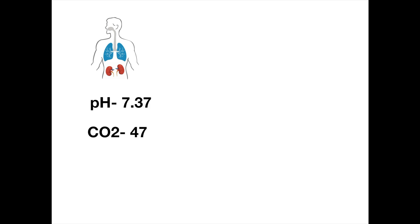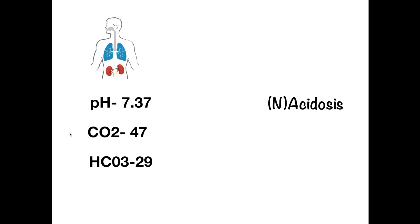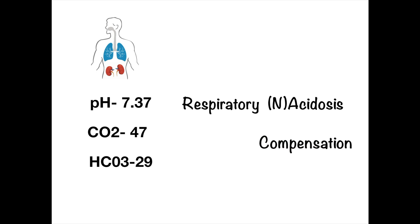Next: pH is 7.37, CO2 is 47, and bicarbonate is 29. The pH is 7.37 — that belongs to the acidotic side, so this is acidosis (note: it is within normal range). The elevated CO2 is causing the acidosis — respiratory acidosis. Bicarbonate is 29, meaning the body tried to compensate by increasing bicarbonate. Was the compensation enough to bring the pH back to normal? The pH is 7.37, which is within the normal range — so this is a full compensation.